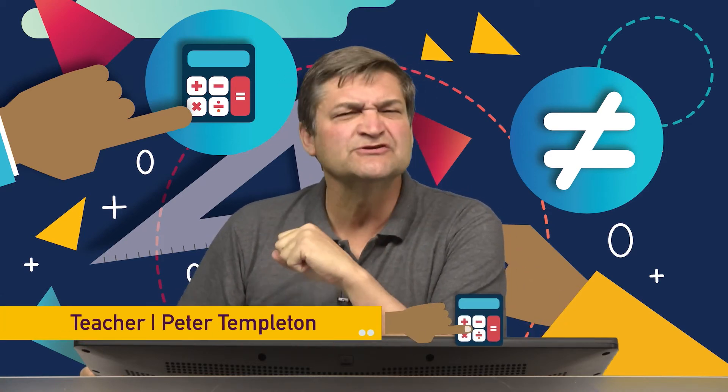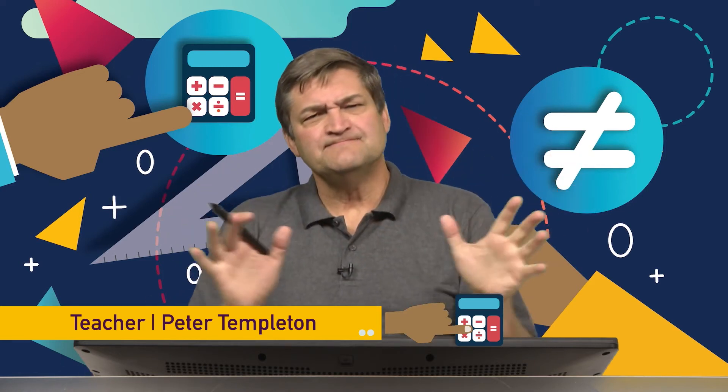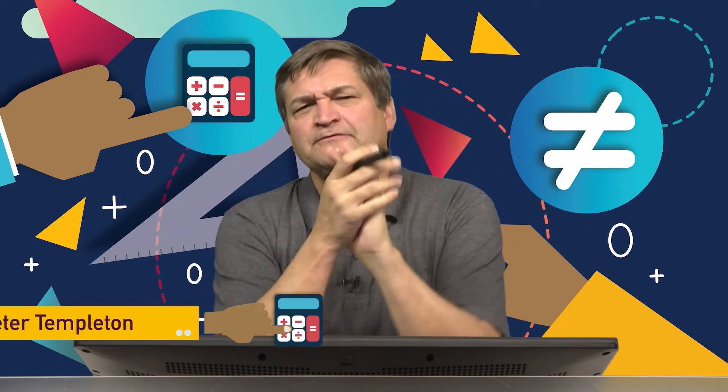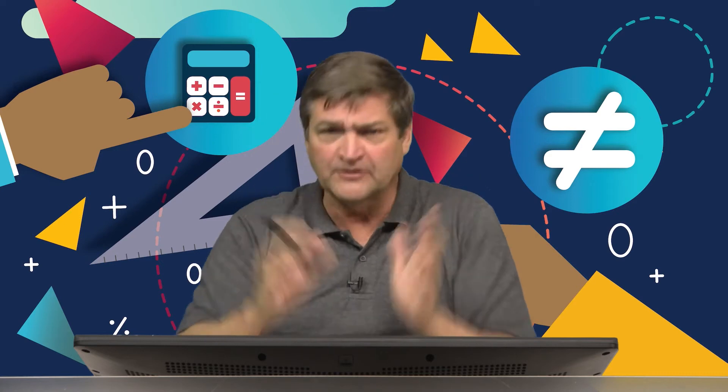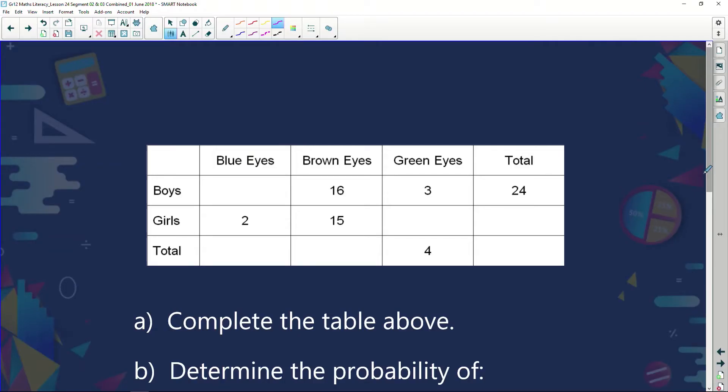Currently we're busy looking at contingency tables, also known as two-way tables. Some time ago somebody in one of my classes wanted to know how many boys and how many girls had blue eyes, brown eyes, and green eyes. They gazed into the eyes of everybody in their class and wrote down the findings, and this is how they put their findings on a two-way table or contingency table. So let's just have a look at this.